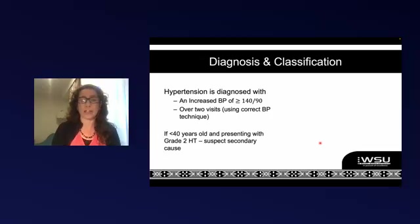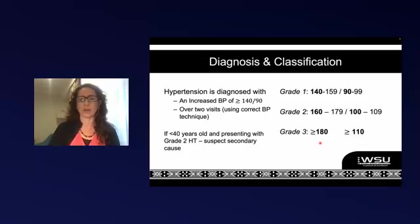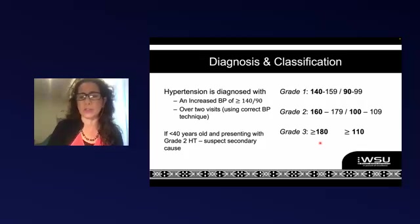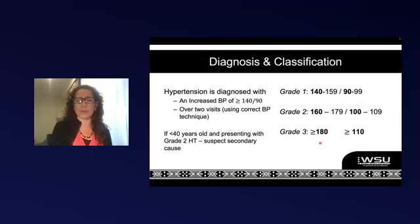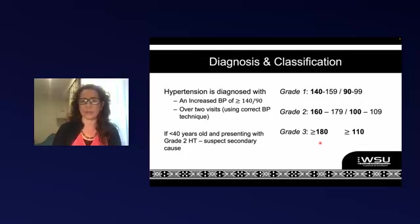Remember, if they're under 40 years old — and especially if they're presenting with grade 2 hypertension — go and look for secondary causes. Our classification has three thresholds for systolics: 140, 160, and 180 for grades 1, 2, and 3, and then 90, 100, and 110 for our diastolic thresholds.